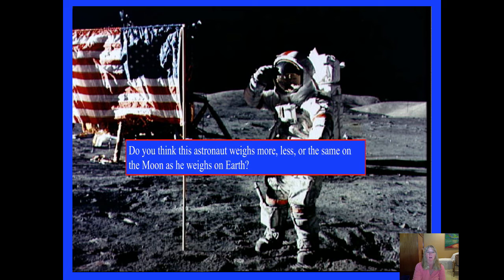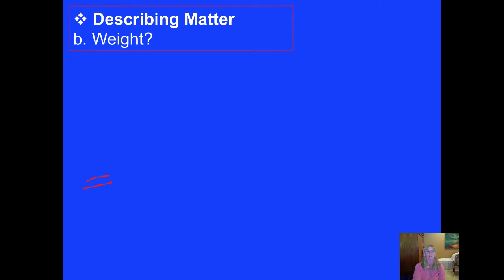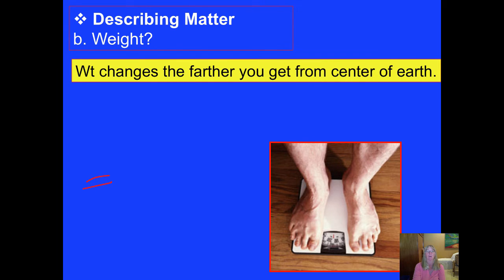So here's our lovely astronaut up on the moon. And the question that we're going to ask then is, does he weigh more, less, or the same on the moon as he weighs on Earth? So now what we have to distinguish is, what's the difference between weight and mass? Remember, matter is anything that has mass and volume. But a lot of times, here on planet Earth, we refer to mass as weight. Weight is a function of how hard the planet is pulling down on you from the center. The gravity of Earth keeps our feet on the ground and exerts a force that pulls down on us.